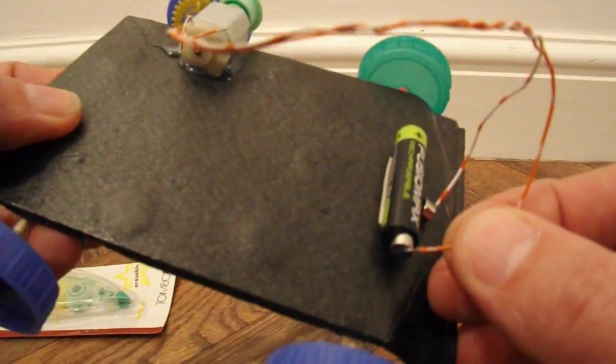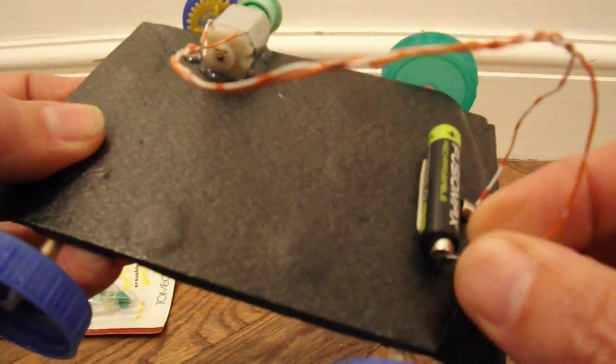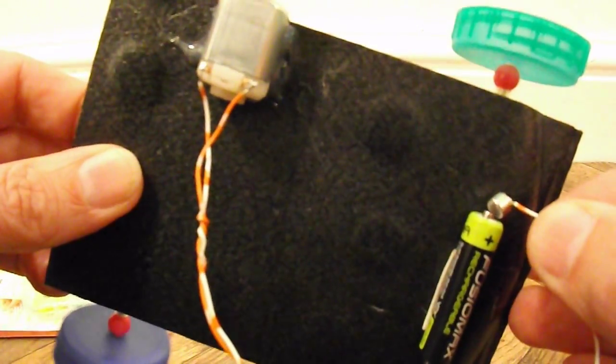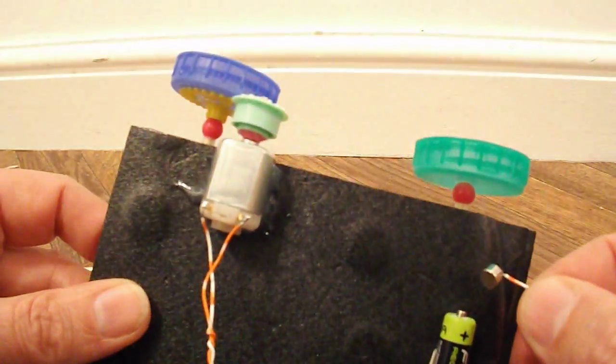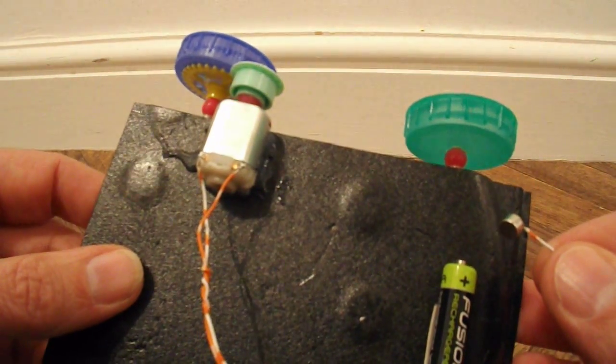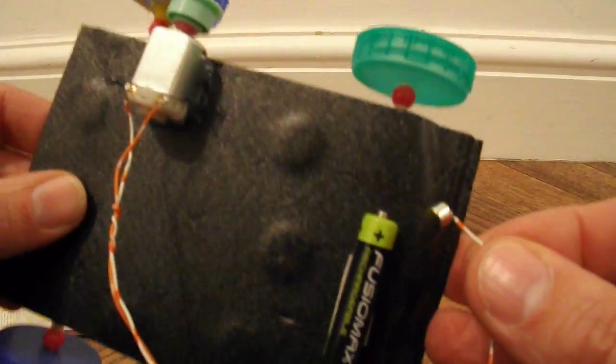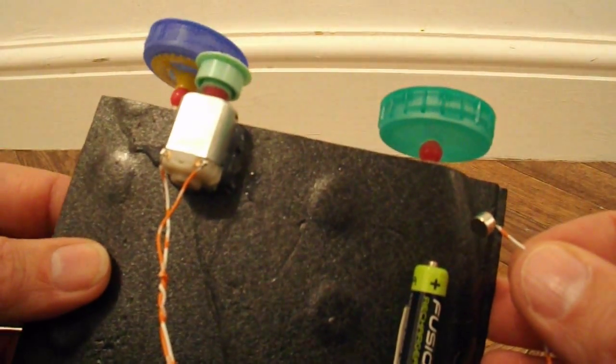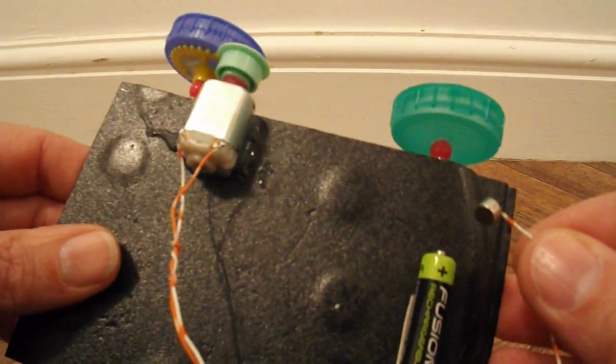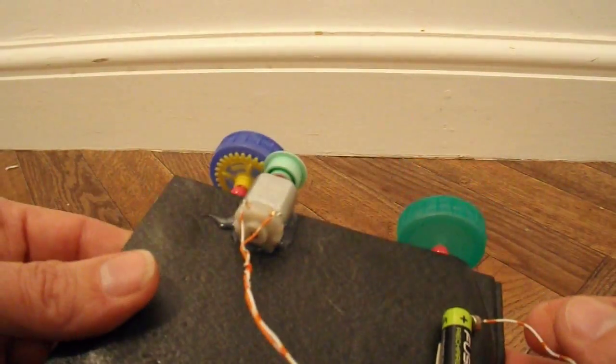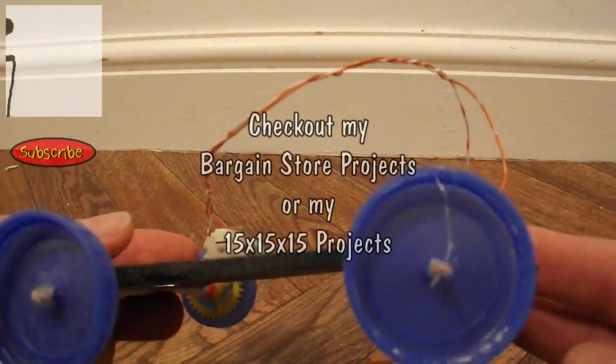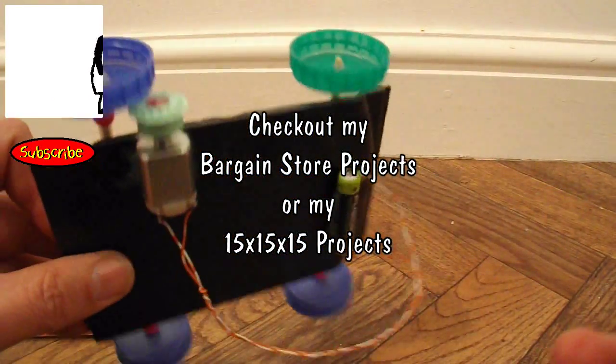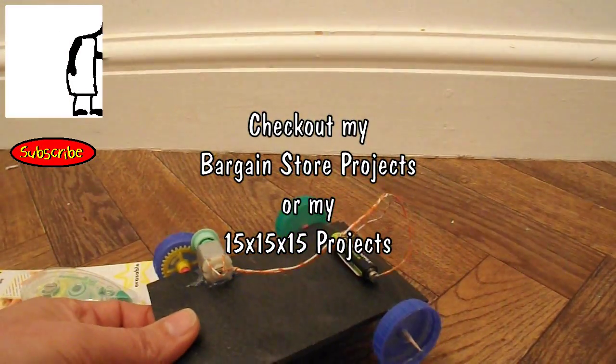I have got some little neodymium magnets on here to actually hold the contacts onto the battery. You don't need to use them, I just happen to have them handy and I thought that would be a convenient way of connecting it without having to use an on-off switch or twist bits of wire. So that's why they're there, you don't need them at all. And the motor's just hot glued in place and that's it. Job done. Two-in-one, two-in-one, let's go.